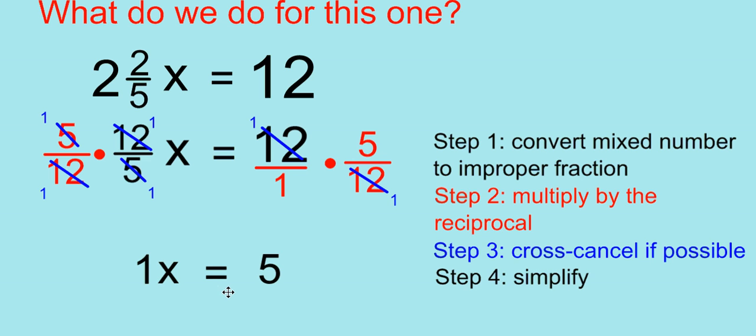When we simplify, we're left with 1x equals 5. And 1 times any number equals that number, according to our identity property of multiplication. So we know that the value of x is 5. And that's how you can use these steps to solve these fraction equations.